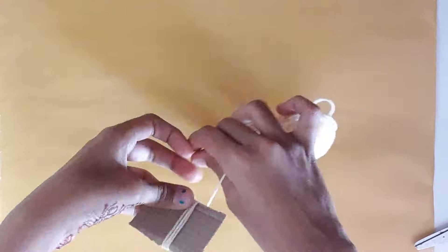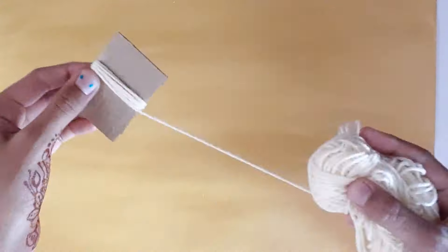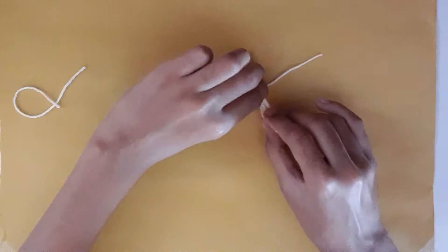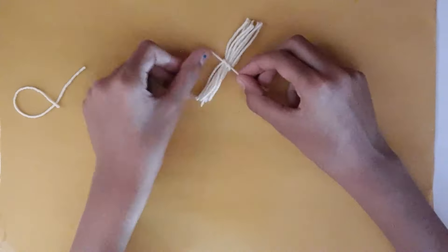Now I am going to wrap the wool around the cardboard for 10 times. And then using a scissor, cutting it off the cardboard. Now using another piece of thread, I am going to tie it in the center.